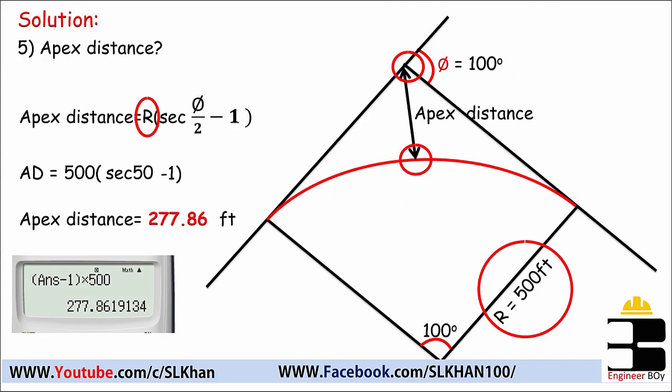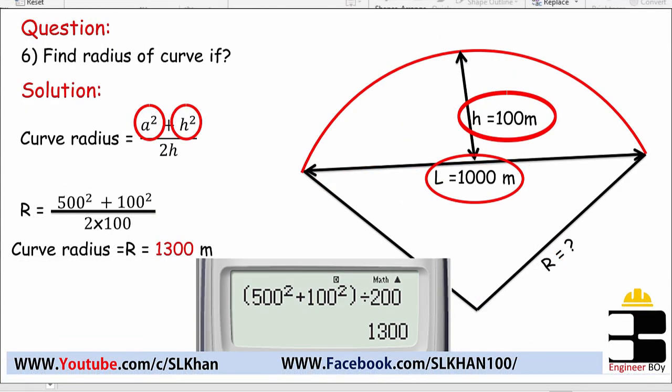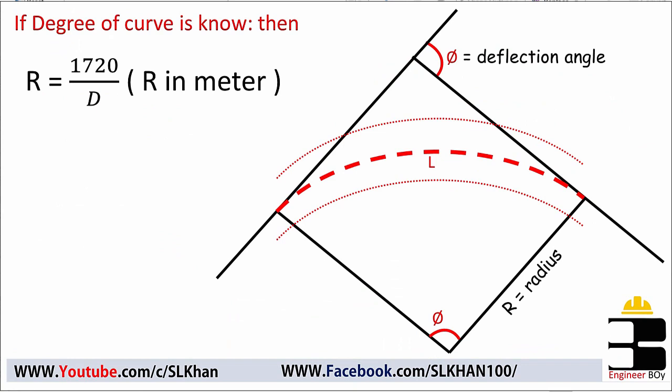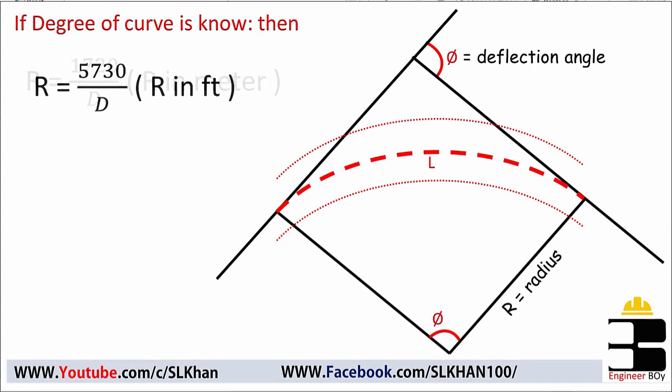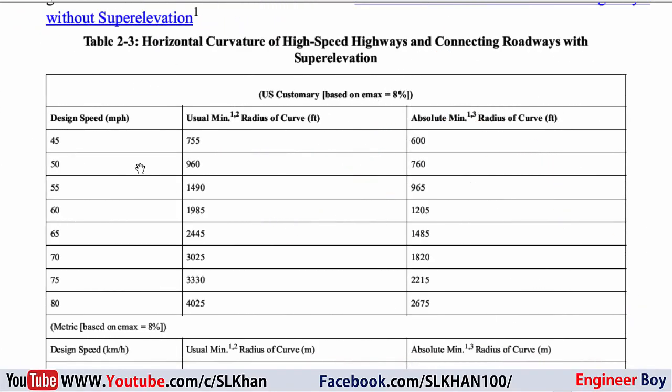Another approach: if you know the degree of curve (D), you can calculate the radius directly. For radius in meters, use R = 1720 / D. For radius in feet, use R = 5730 / D, where D is the degree of curve.